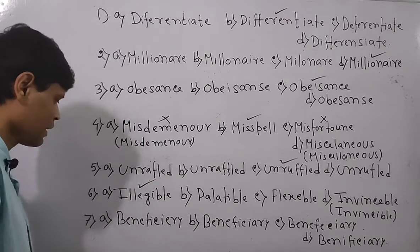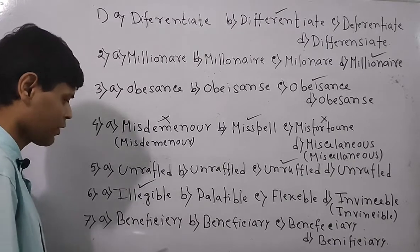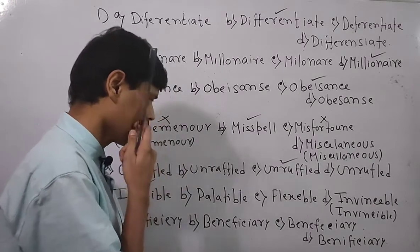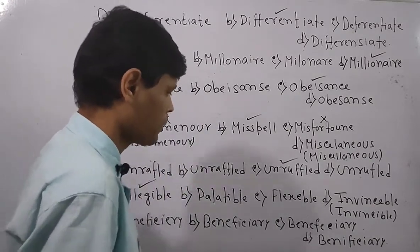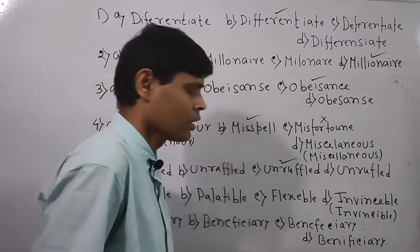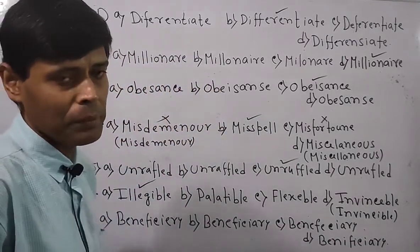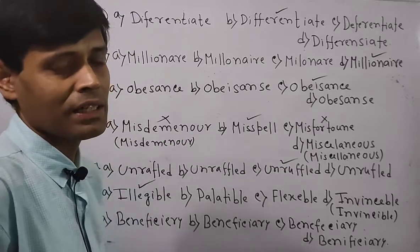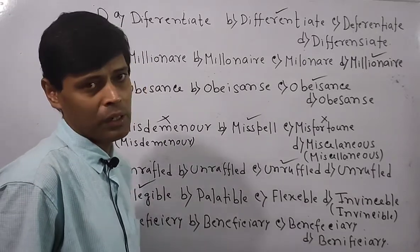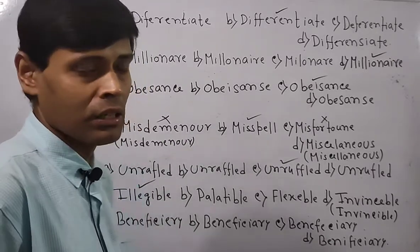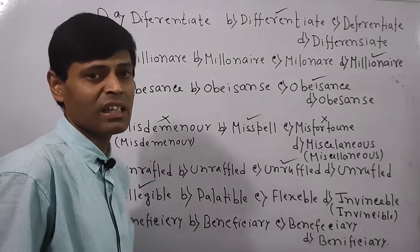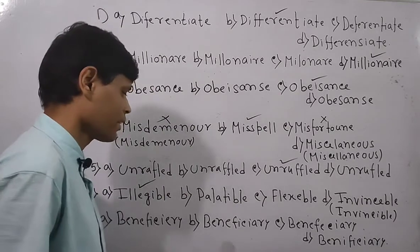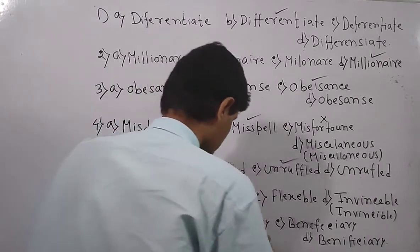Now look over the next question. The options for 'beneficiary' are: B-E-N-E-F-I-C-I-E-R-Y, B-E-N-E-F-I-C-I-A-R-Y, B-E-N-E-F-E-C-I-A-R-Y, or B-E-N-I-C-I-A-R-Y. The base word is 'benefit' — B-E-N-E-F-I-T — and we add C-I-A-R-Y, not C-I-E. So instead of I-E it should be I-A. The right spelling is B-E-N-E-F-I-C-I-A-R-Y — option B.